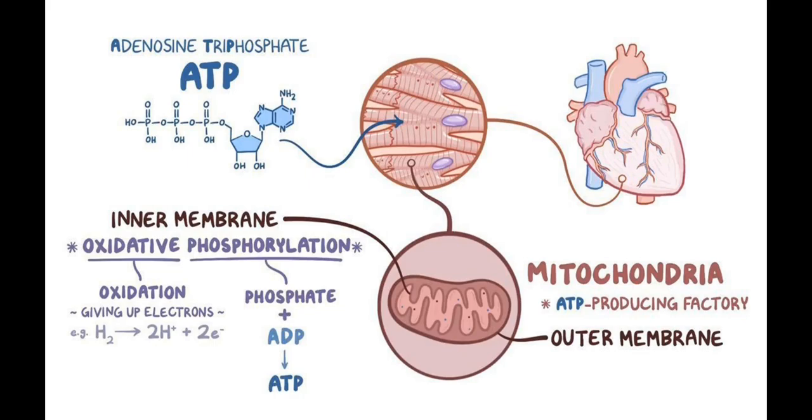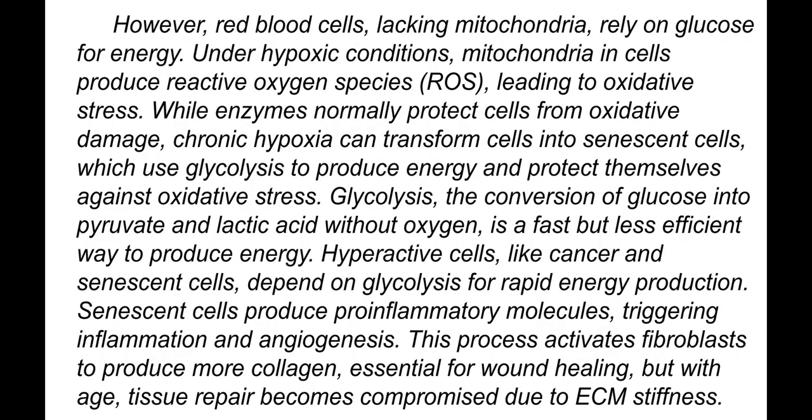This is the normal way to produce energy. However, red blood cells are the only cells in our body that lack mitochondria and rely on glucose for energy. Under hypoxic conditions — a shortage of oxygen — mitochondria in cells produce reactive oxygen species, leading to oxidative stress. While enzymes normally protect cells from oxidative damage, chronic hypoxia can transform cells into senescent cells, which use glycolysis to produce energy and protect themselves against oxidative stress.